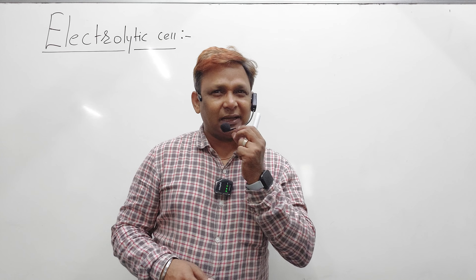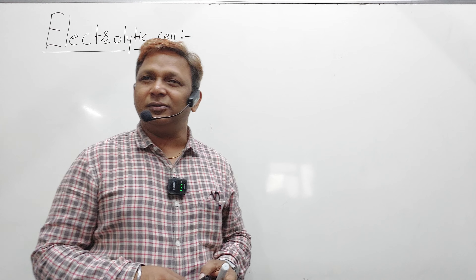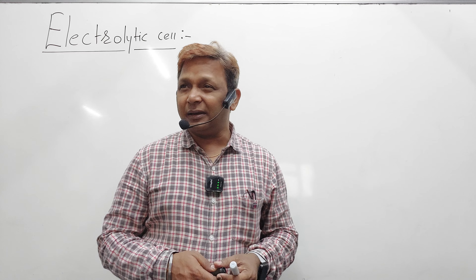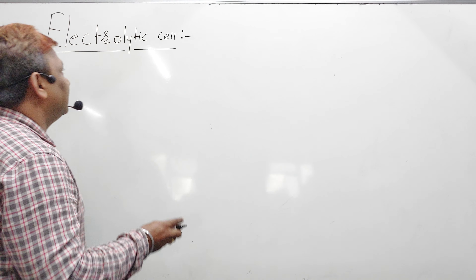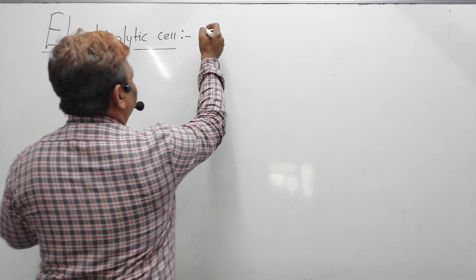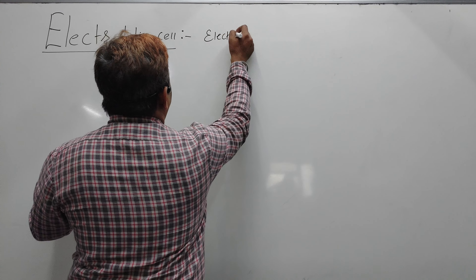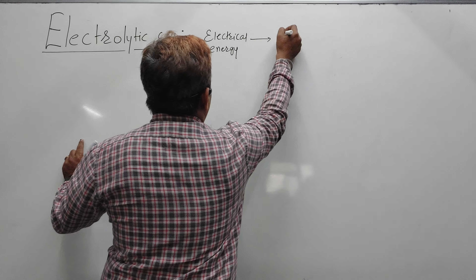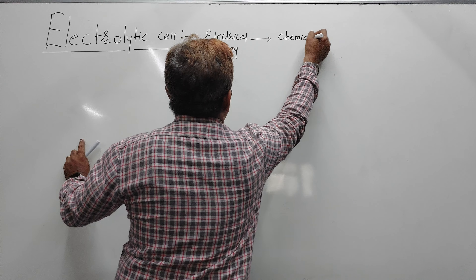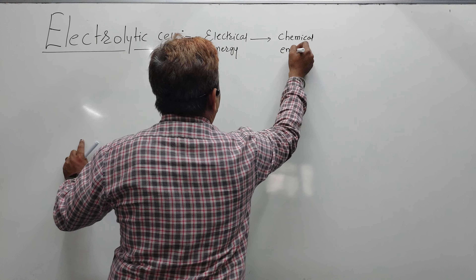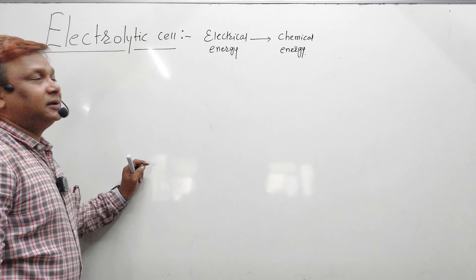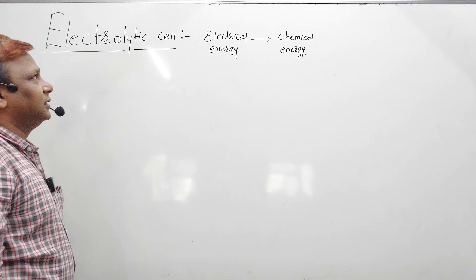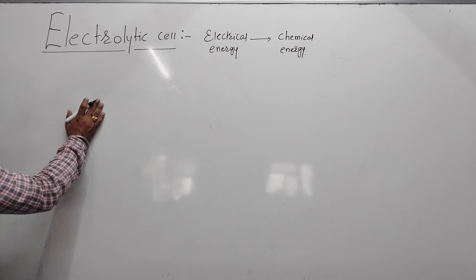What is the electrolytic cell and what is the galvanic cell? A galvanic cell is a device which is used to convert chemical energy into electrical energy. An electrolytic cell is a device which converts electrical energy into chemical energy.